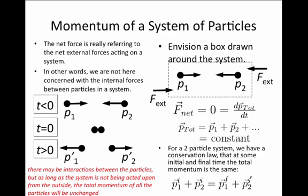For a two-particle system, we may write down a conservation law, much like we did with energy, and write down that if we could measure the total momentum for the system at some initial time and do so again at some later final time, the total momentum will be the same. In equation form, this would be p1 initial plus p2 initial equals p1 final plus p2 final, where each of these terms is a vector.